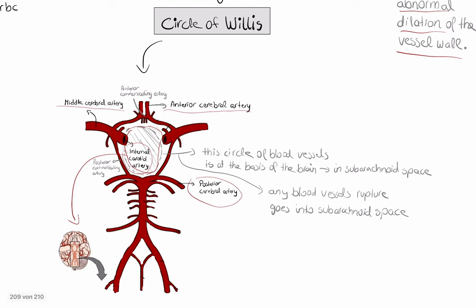This circle is located in the subarachnoid space. If we have any aneurysm here — for example, this one here — this aneurysm could rupture, and blood then goes into the subarachnoid space.